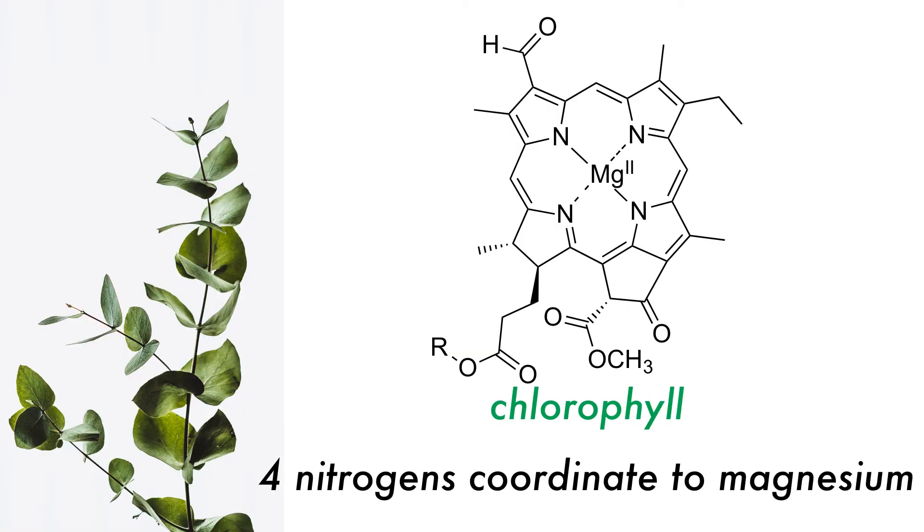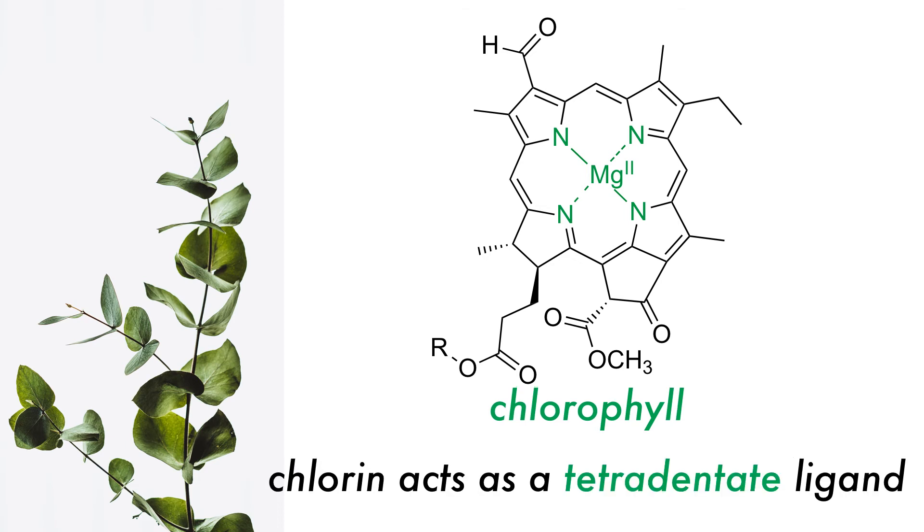Chlorophyll is a key part of the photosynthesis of plants, but it is also a chelating ligand. The four nitrogen atoms coordinate to a central magnesium via dative covalent bonds. Chlorophyll then acts as a tetradentate ligand.